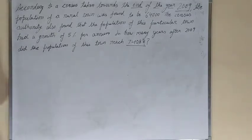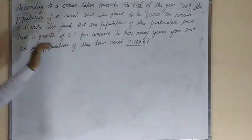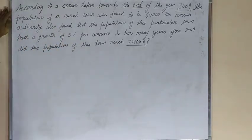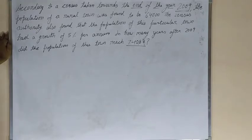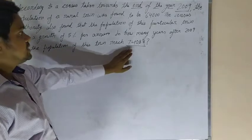Hello friends! According to a census taken towards the end of the year 2009, the population of a rural town was found to be 64,000. The census authority also found that the population of this particular town had a growth of 5% per annum. In how many years after 2009 did the population of this town reach a certain level?